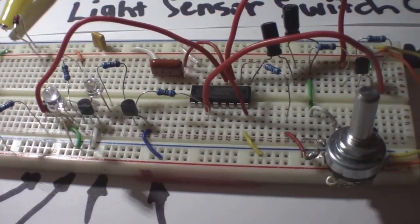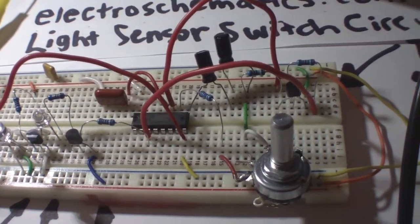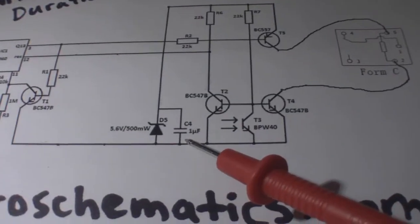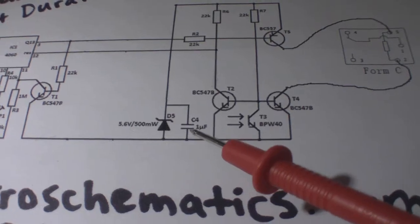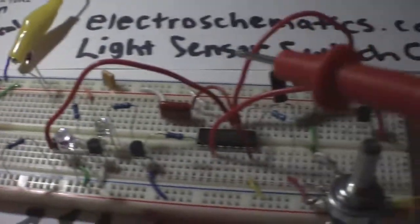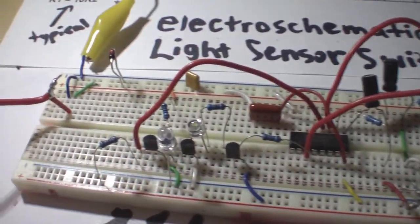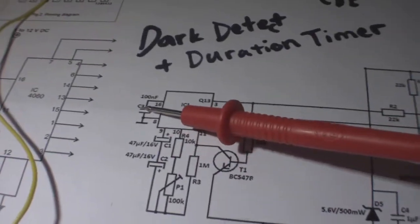Across the rail which is right here, 1 microfarad. And then there's also another one here, a 104 which is 100 nanofarad. And that's this guy here. Now in the circuit...